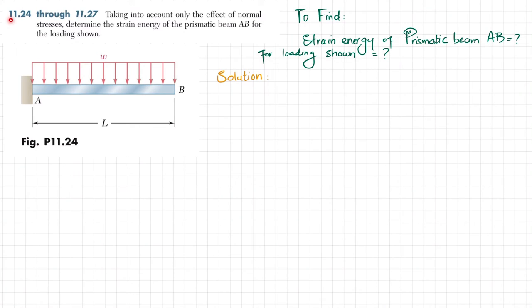Welcome back to problem 11.24. The statement is: taking into account only the effect of normal stresses, determine the strain energy of prismatic beam AB for the loading shown. You can see this is a cantilever beam AB.